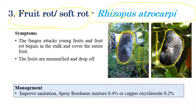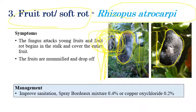When examined under the microscope, spores of Rhizopus can be clearly seen, with a stalk-like appearance along with columella and spores within sporangia. For management, improving sanitation and spraying Podometer at 0.4 percent or Copper oxychloride at 0.2 percent are recommended.